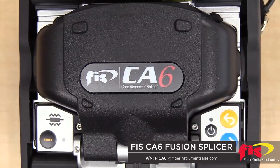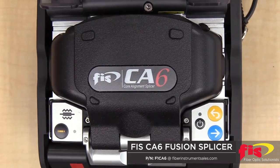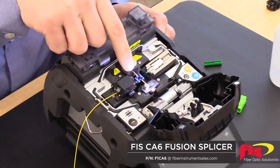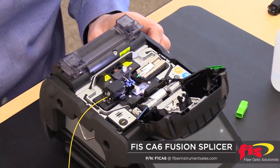The FIS CA-6 is an affordable and effective solution for doing fiber-to-fiber splicing, as well as for FIS's line of Cheetah and Armadillo splice-on connectors.